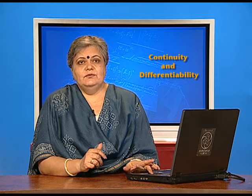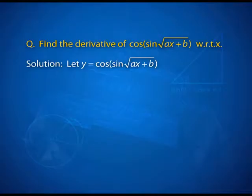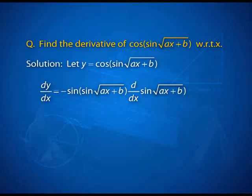Let us say y is cos(sin(√(ax + b))). Starting with the outer layer, that of the cosine function, the derivative can be written as −sin(sin(√(ax + b))) times the derivative of sin(√(ax + b)). If sin(√(ax + b)) were called u, then we would multiply by the derivative of u with respect to x. But we are going to cut short — we are not going to bring u and v into this method.